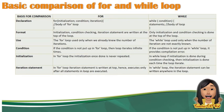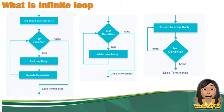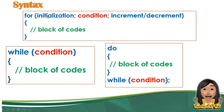Ito naman yung basic comparison ng for at saka ng while loop. Unang pagkakaiba nila is the declaration — kung mapapansin ninyo sa dalawa, magkaiba sila ng syntax. Pangalawa, magkaiba din sila ng format. Kasi nga sa for loop, ang initialization, condition checking, iteration statement, ay nakalagay lahat sa taas.